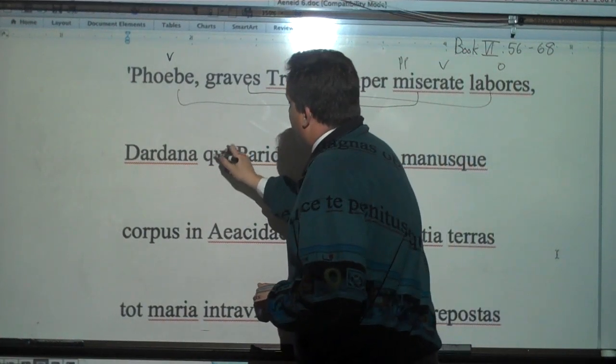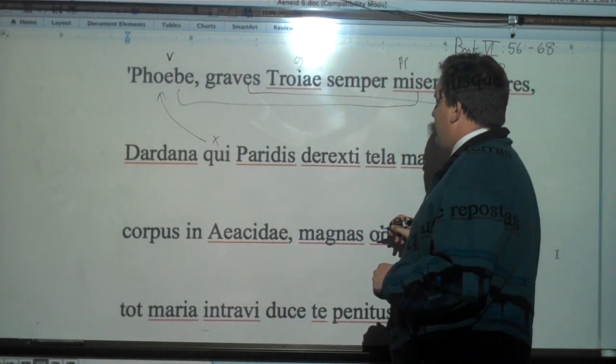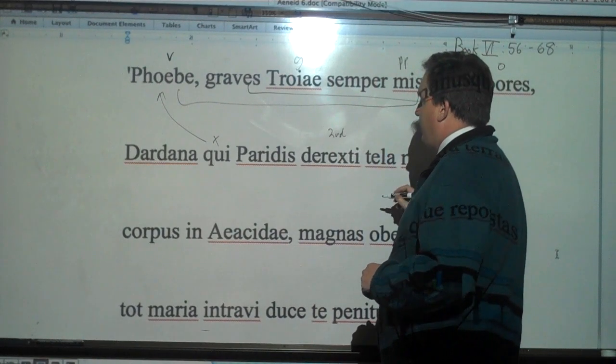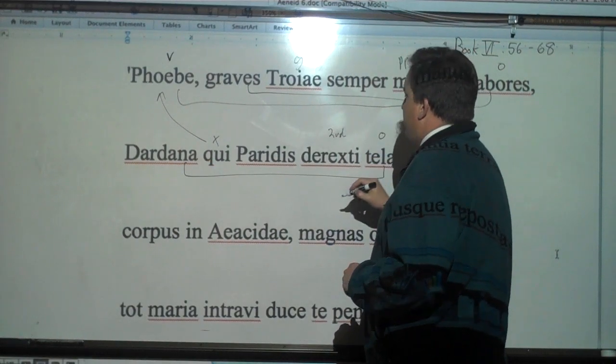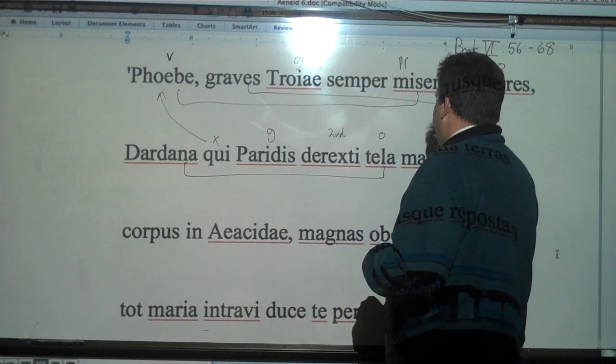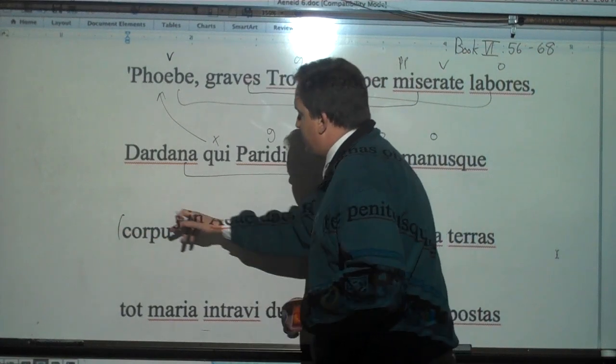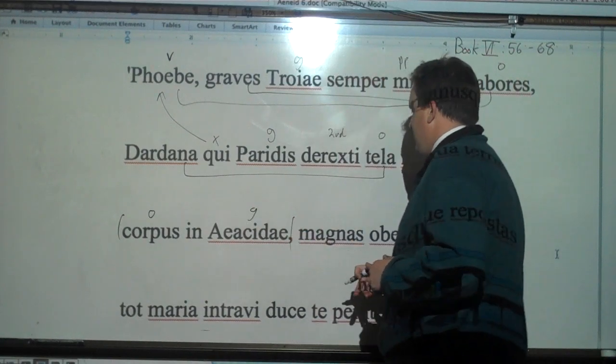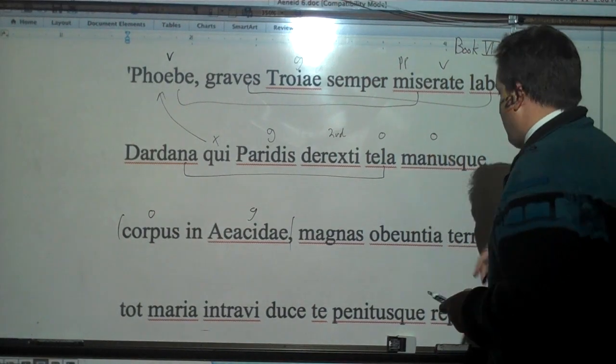You, qui, now this is a relative subject going back to Phoebus. You, who detrexisti. Now this is short for detrexisti. And this is second person singular perfect. You, who guided the Dardanian tela, the Dardanian weapons of Paris and the hands of Paris as well, into, prepositional sandwich, prepositions in the middle, into the body of Aeacides, another word for Achilles. And then we'll keep going on here. I'm going to scroll it up.